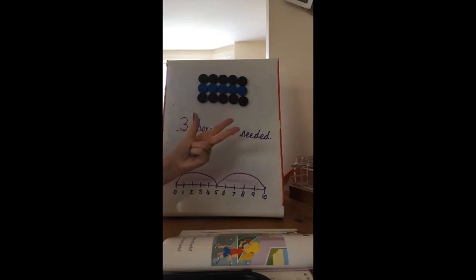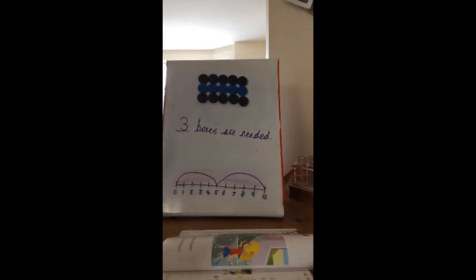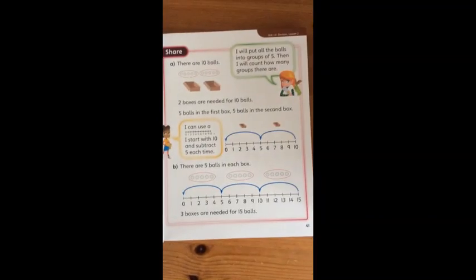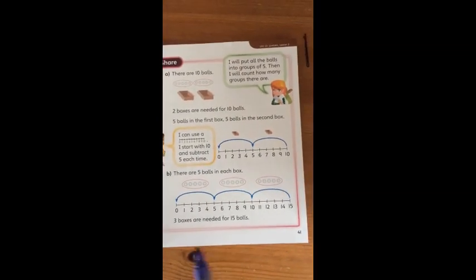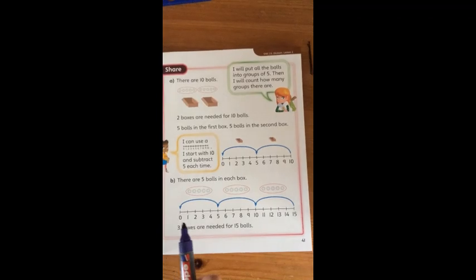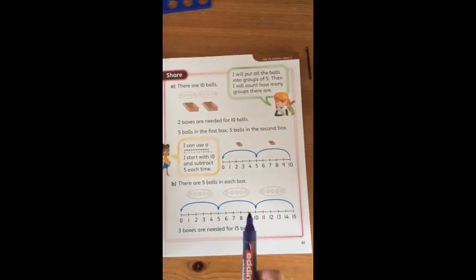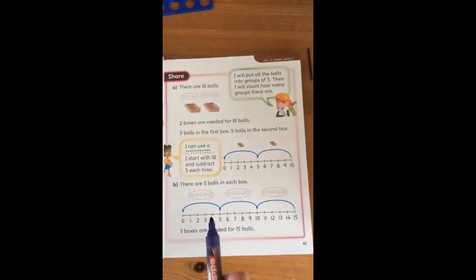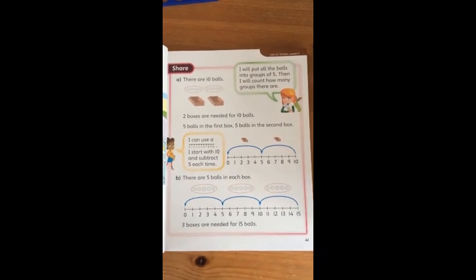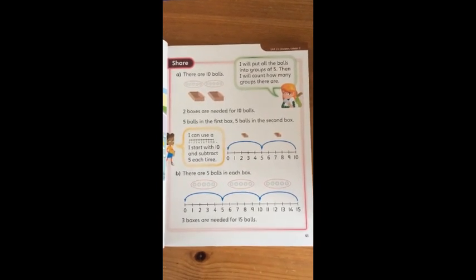You can work it out like I have, or if you'd like, you could have a go at working it out as it suggests in the share box — using your number line of 15, taking away five each time, and then counting how many jumps you've used.